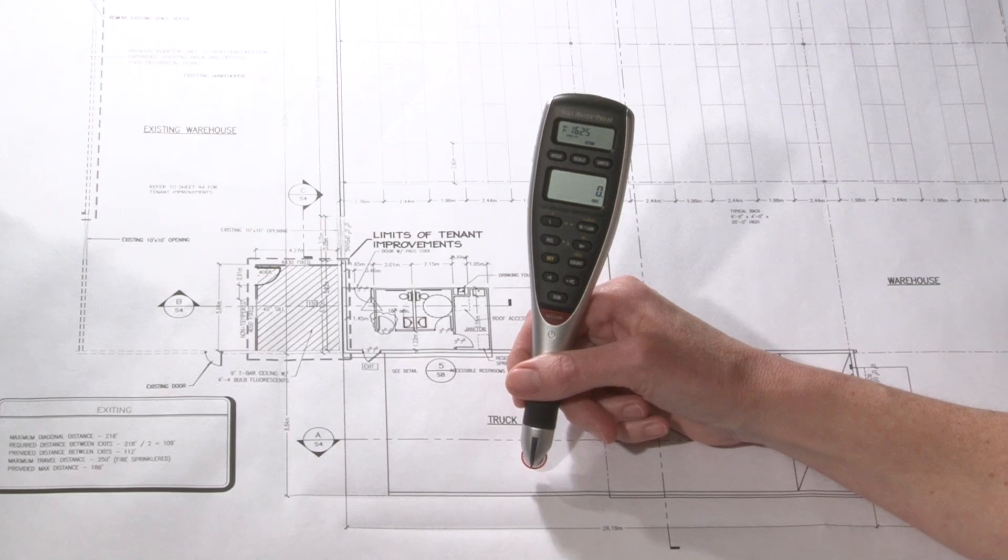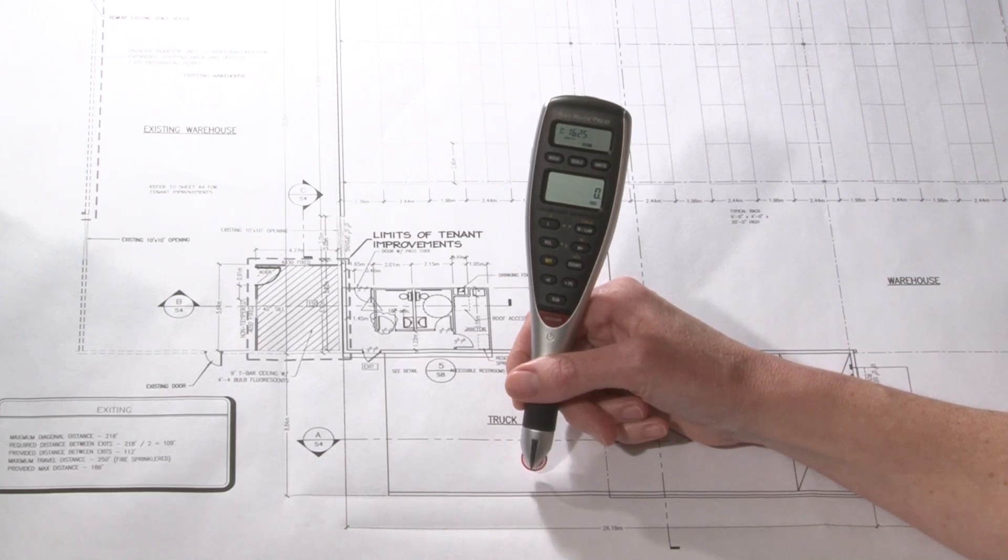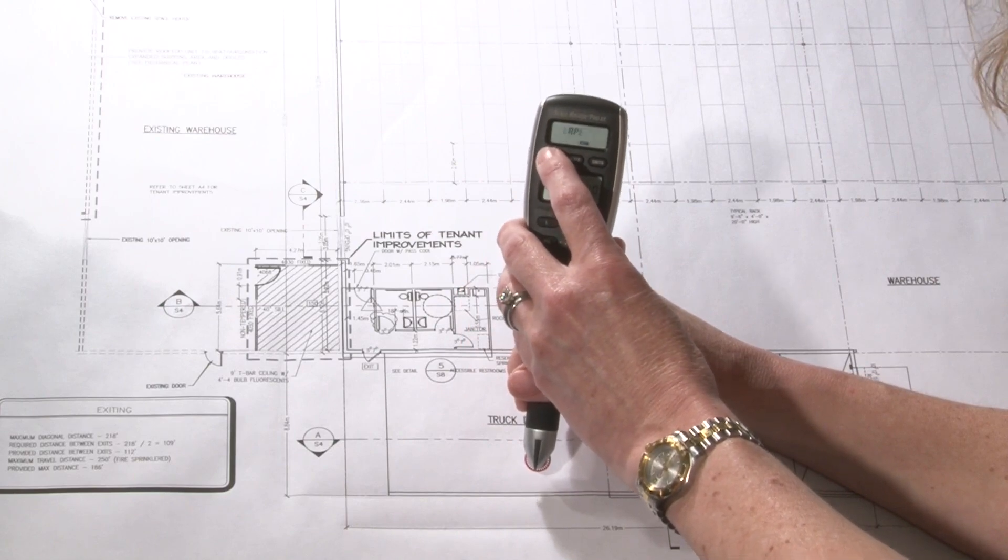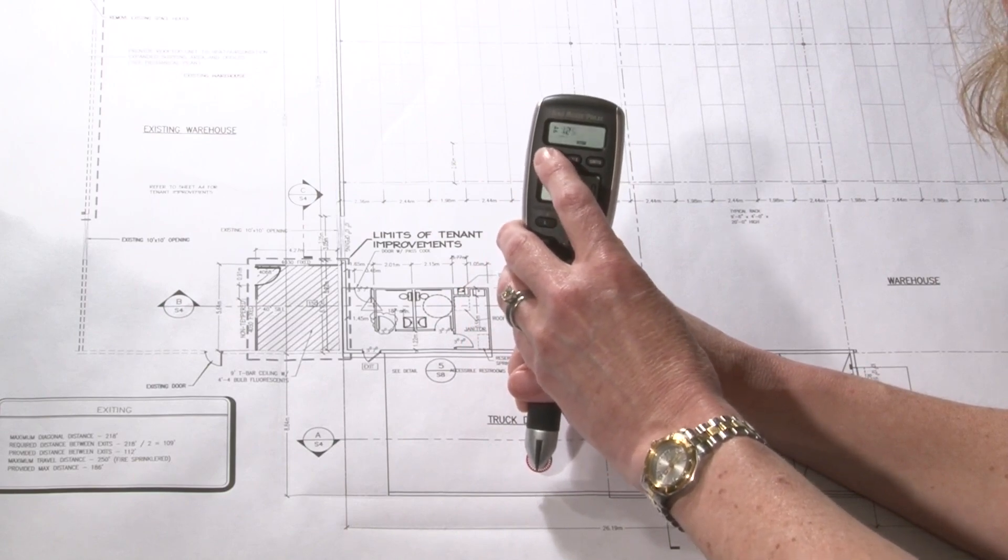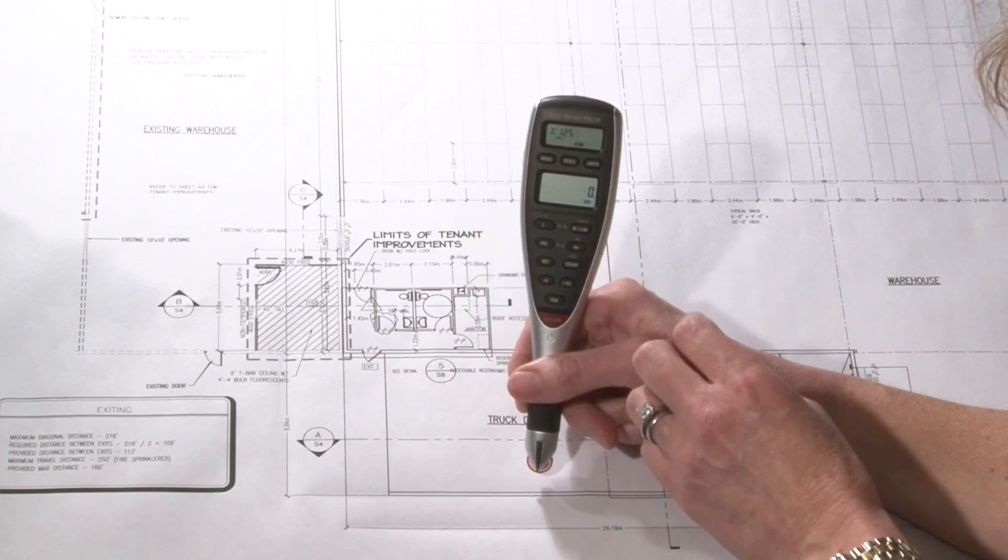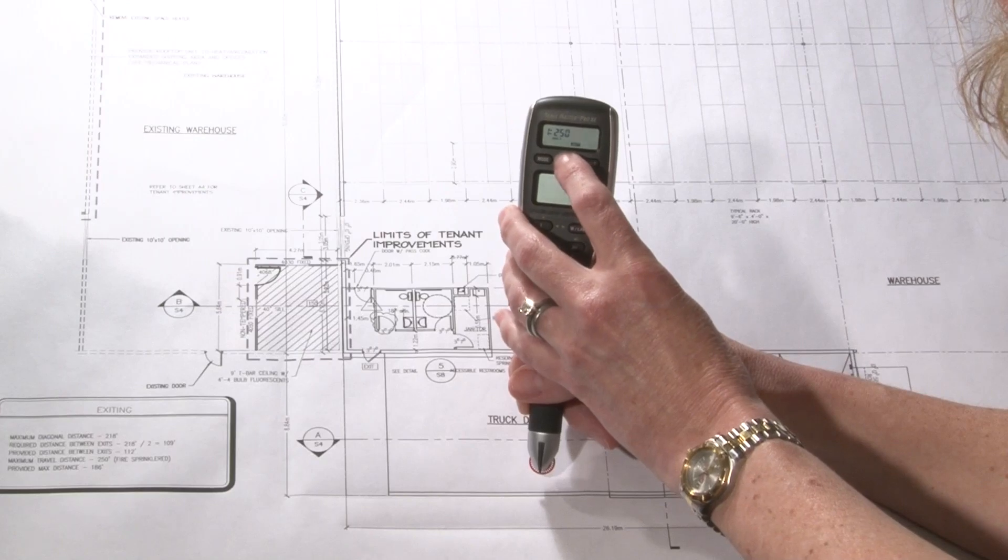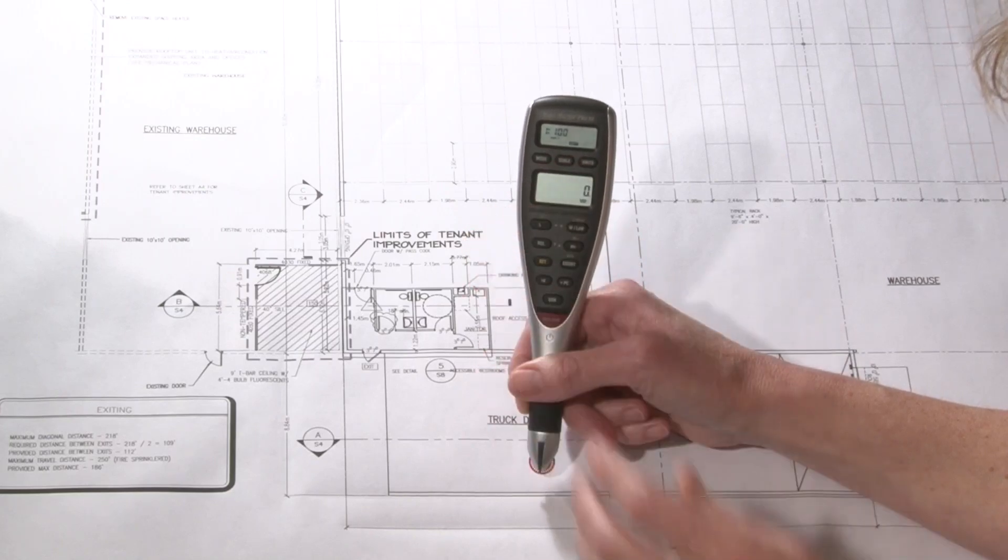Next, you want to set up the device for that scale. By pressing the mode button, I can scroll through the different scales, and I want to choose Engineering 1. Then I press the scale button and scroll until I see ours, which is 1 to 100.